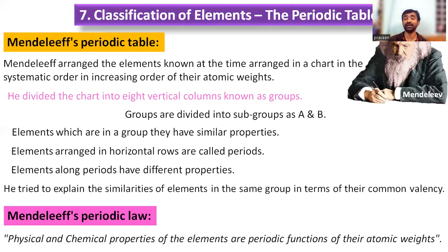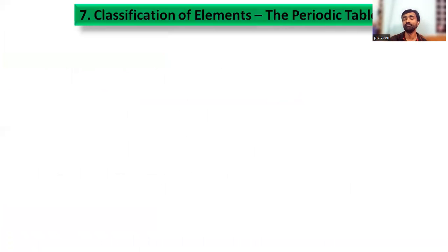Periodic functions means that at certain time periods, elements give some properties — maybe in their physical state, valency, or chemical properties — and these properties change repeatedly.